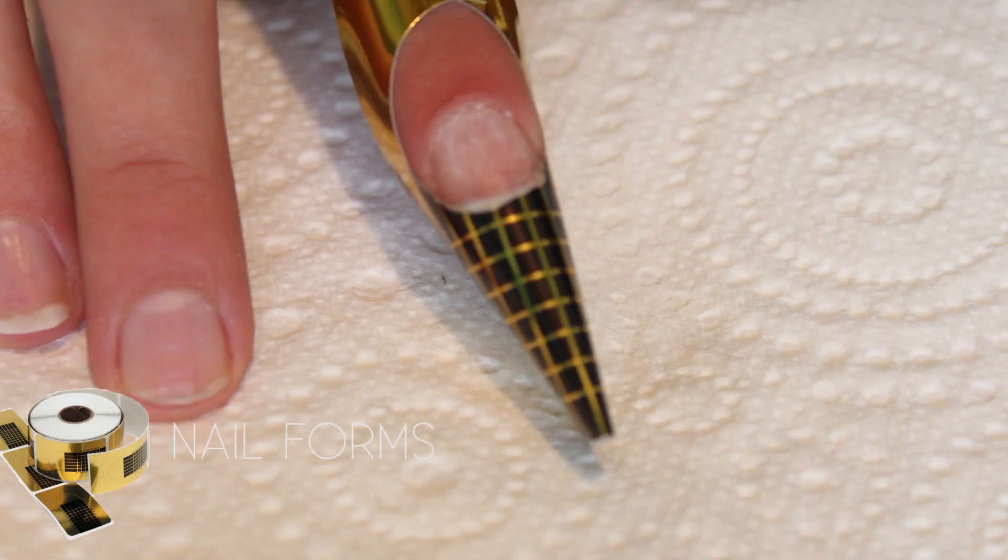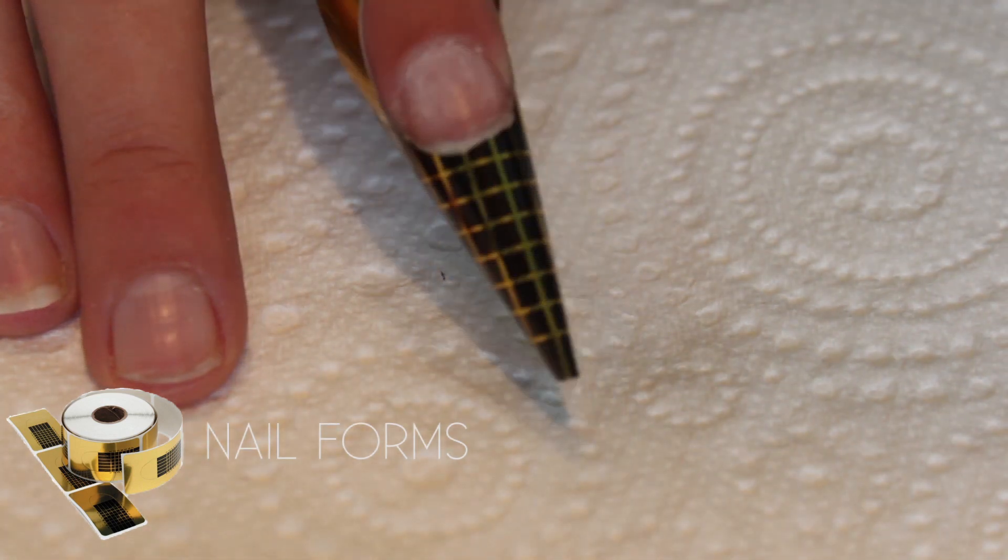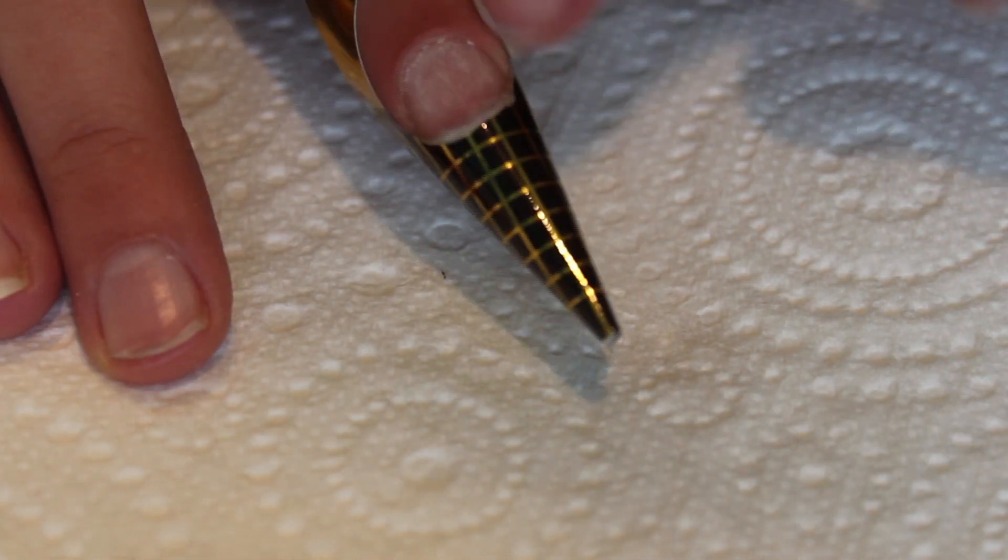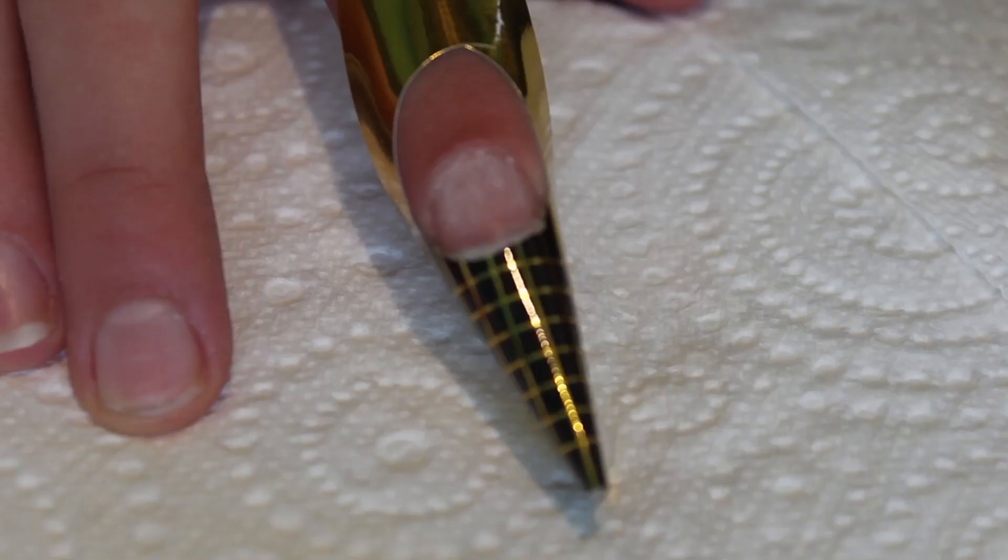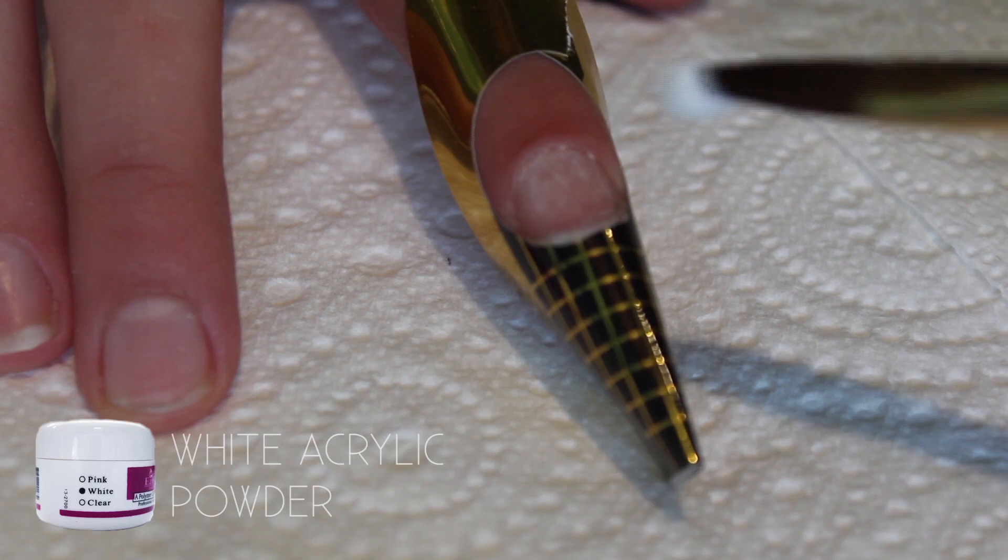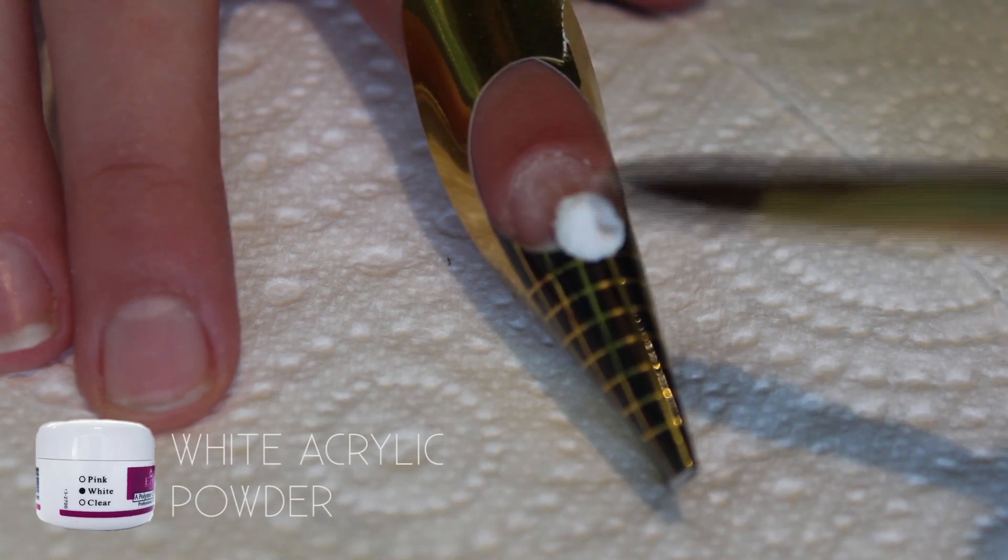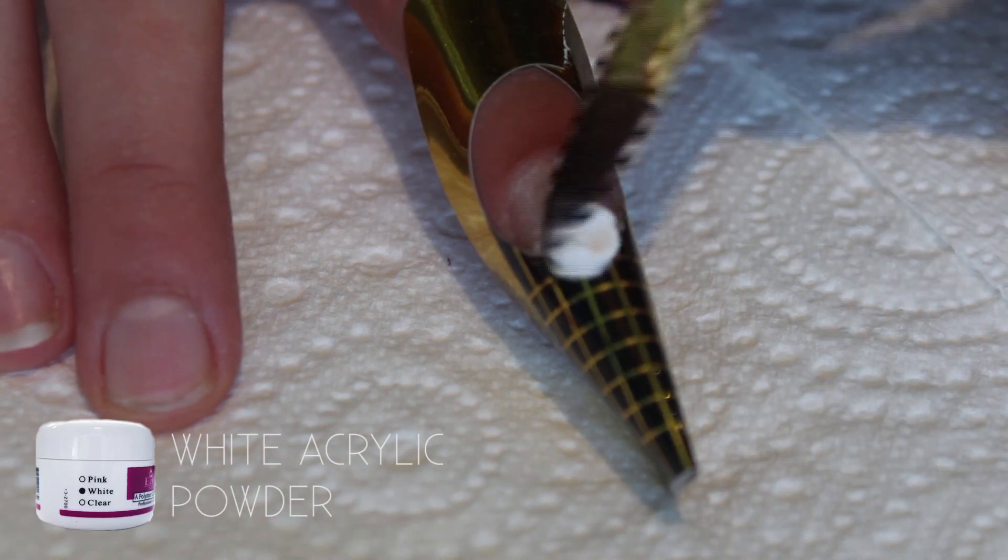Okay, so the first thing I've done is I've prepped, filed my nail and put on a nail form. Just making sure it's nice, it's not pointing up to make the nail look unnatural. And now I'm just going to go in with a big blob of white acrylic powder.